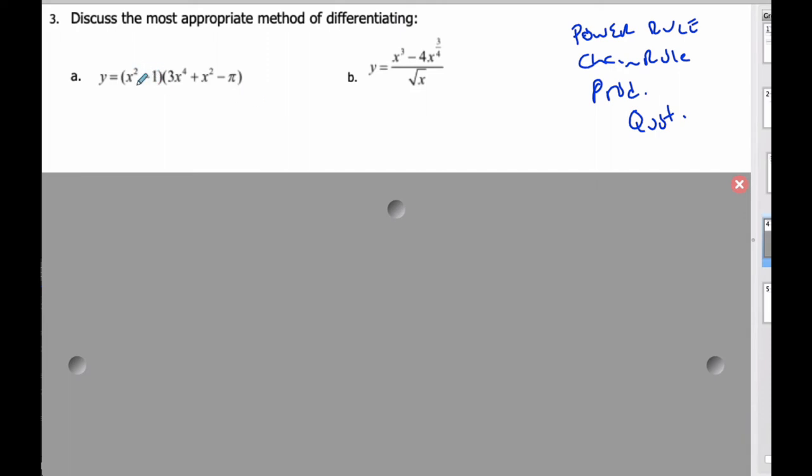I think if I use the product rule, I'm going to end up with two parentheses plus two other parentheses, and I have to multiply that all out. In this case, I think it is probably simplest to expand and then do the power rule. That will be the most appropriate method there.